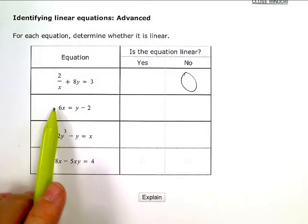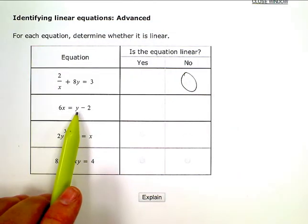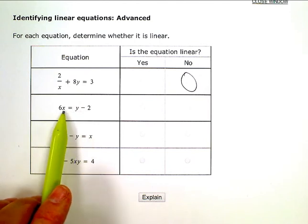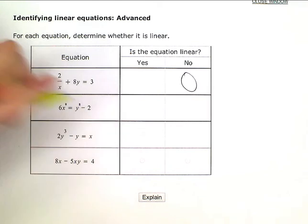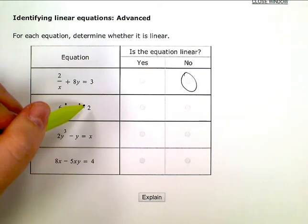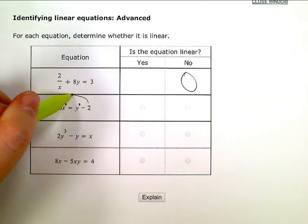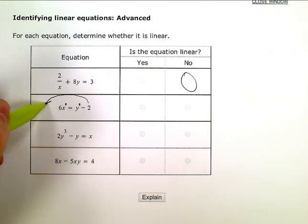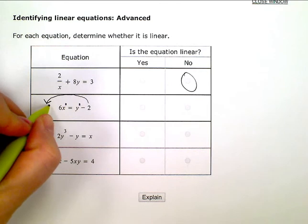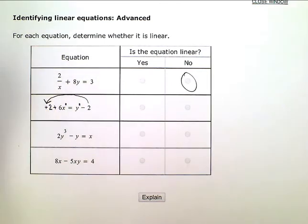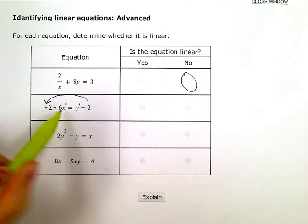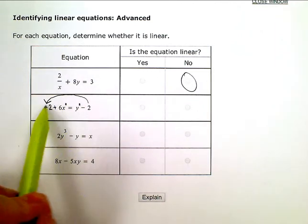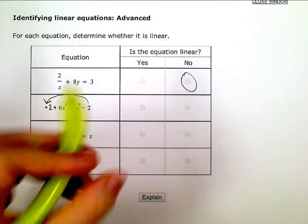Here I have an x and a y. They both don't have an exponent on them unless you want to consider one, right? x to the first or y to the first to their own power. And if you look at this one and throw the negative 2 over to the other side and make this a positive 2 plus 6x, I have y equals 2 plus 6x. It's in slope-intercept form at that point. This one is linear.